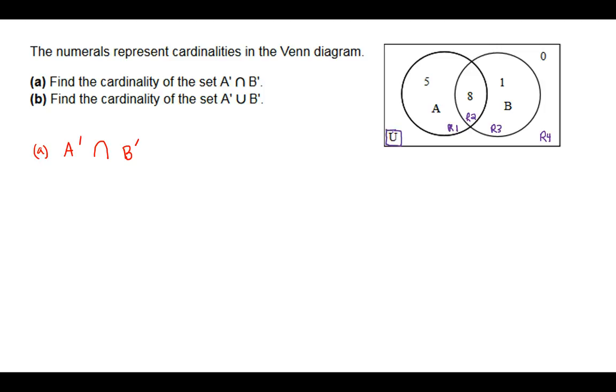The universal set is everything, and so don't say that that U is region 4. All of it is U, the universal set. That's why I like to sometimes write it up in a corner like this, so maybe that might be reinforced.